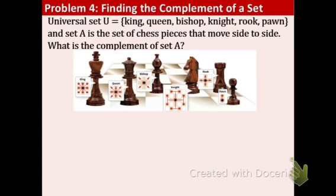And we denote that by having apostrophe. Okay. Last example. Universal set U contains king, queen, bishop, knight, rook, and pawn. And set A is the set of chess pieces that move side to side. What is the complement of set A? So all you chess lovers out there, you'll love this problem.